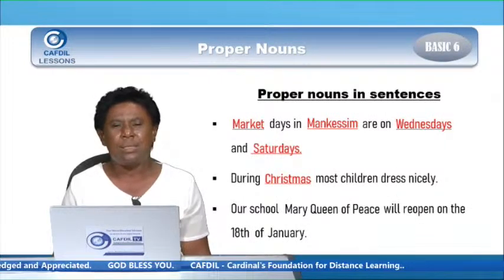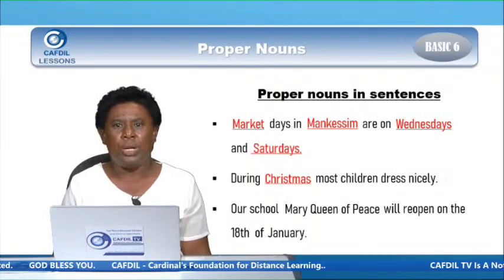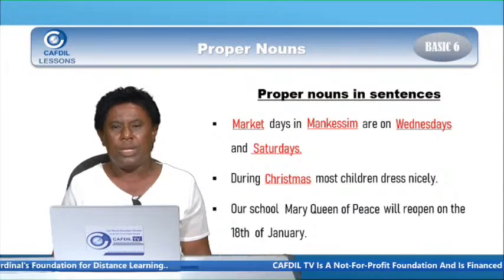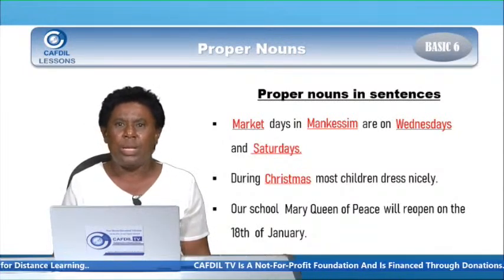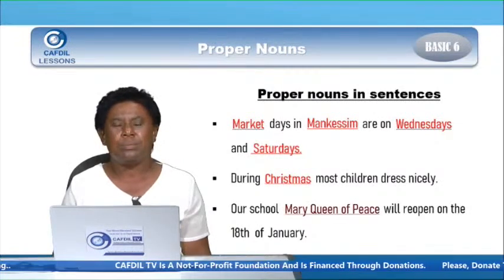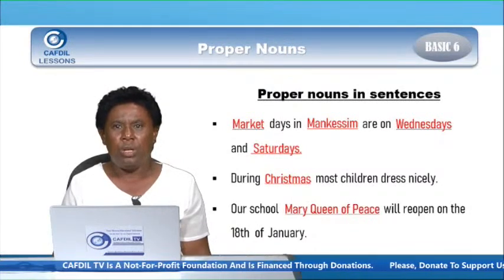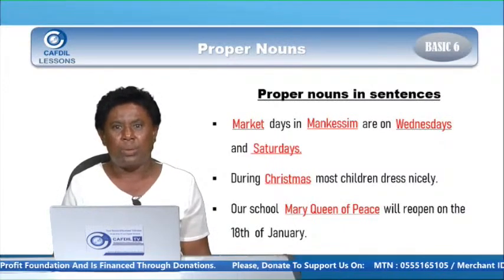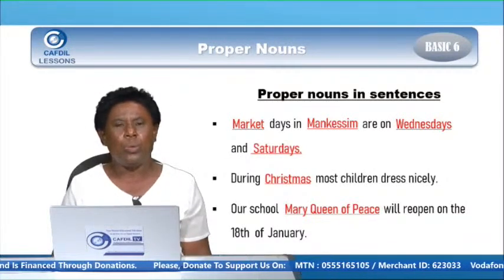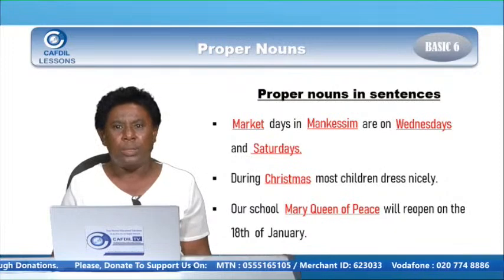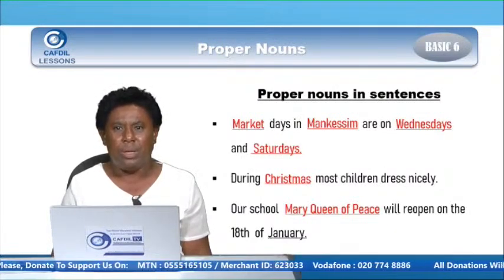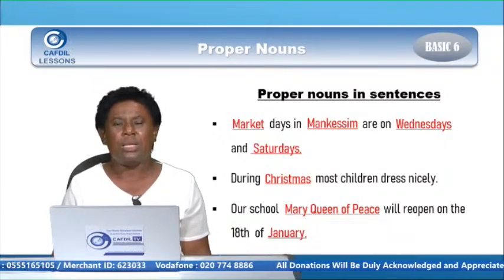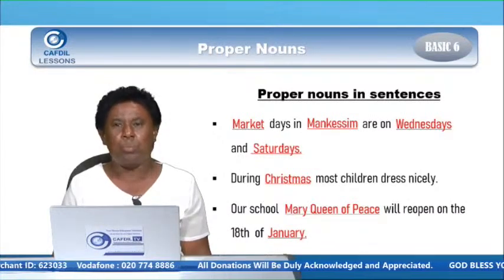With the next sentence, we have: Our school, Mary Queen of Peace, will reopen on the 18th of January. Let's underline the proper noun in the sentence. Mary Queen of Peace — it's a particular name given to a school, and it's a proper noun. It starts with capital M for Mary, capital Q for Queen, and capital P for Peace. And then we have the month of reopening — January, which also starts with capital J, and it's a proper noun.